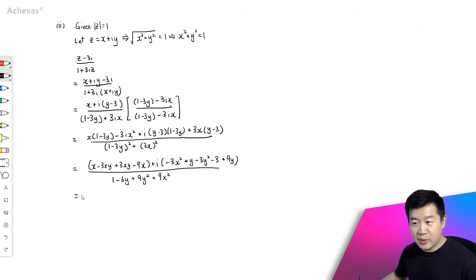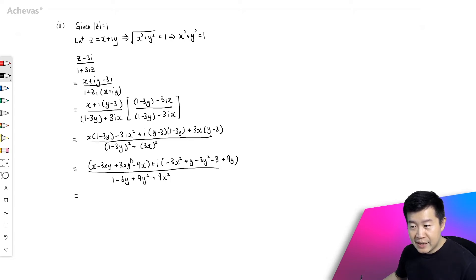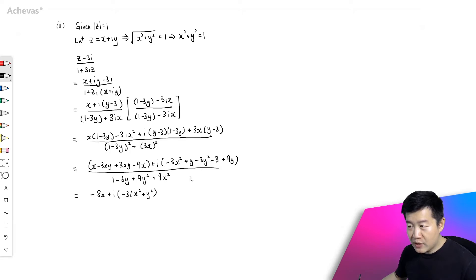I can really see the possibility of compressing some of the expressions, because x² + y² = 1. In the real portion of the numerator, −3xy and +3xy disappear, so x − 9x gives −8x. Then plus i of: I can group −3x² and −3y², giving −3·(x² + y²), which becomes −3·1 = −3. And for the remaining terms: y + 9y gives +10y. So the imaginary part of the numerator is 10y − 3.